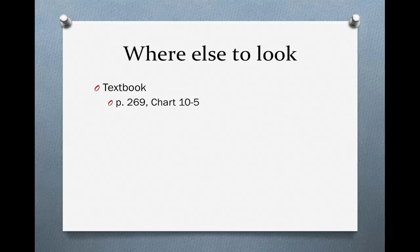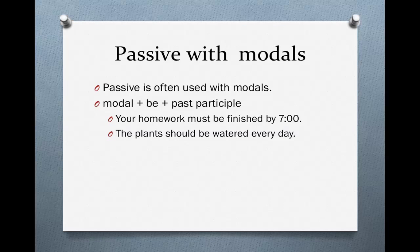Passive with modals. For more information, turn in your textbook to page 269 and look at chart 10-5. Passive with modals is very easy. The passive is often used with modals. In order to make a sentence with passive and a modal, you need to use the modal plus the verb be plus the past participle. All you need to use is be. You don't change the form of be. If you remember from last session when we studied modals, we talked about how it's the base form of the verb that goes after the modal — you don't change the form of the verb at all. It's just the modal and the verb. Nothing special. The same here. You use the modal and be. No other form of be.